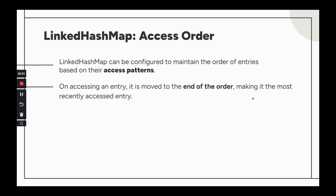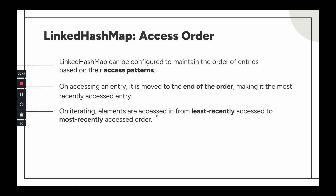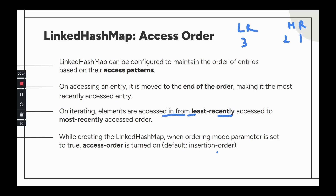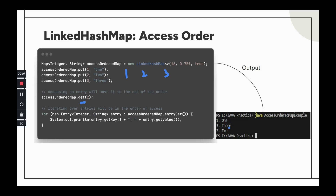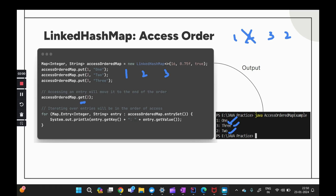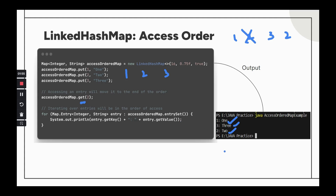On accessing an entry, it moves to the end — making it the most recently accessed. Iterating gives elements from least recently used to most recently used. For example, with one, two, three inserted and two accessed via get(), the output becomes one, three, two — two moved to the end. By setting accessOrder to true, access order is maintained instead of insertion order. This clarifies the key difference between insertion order and access order.